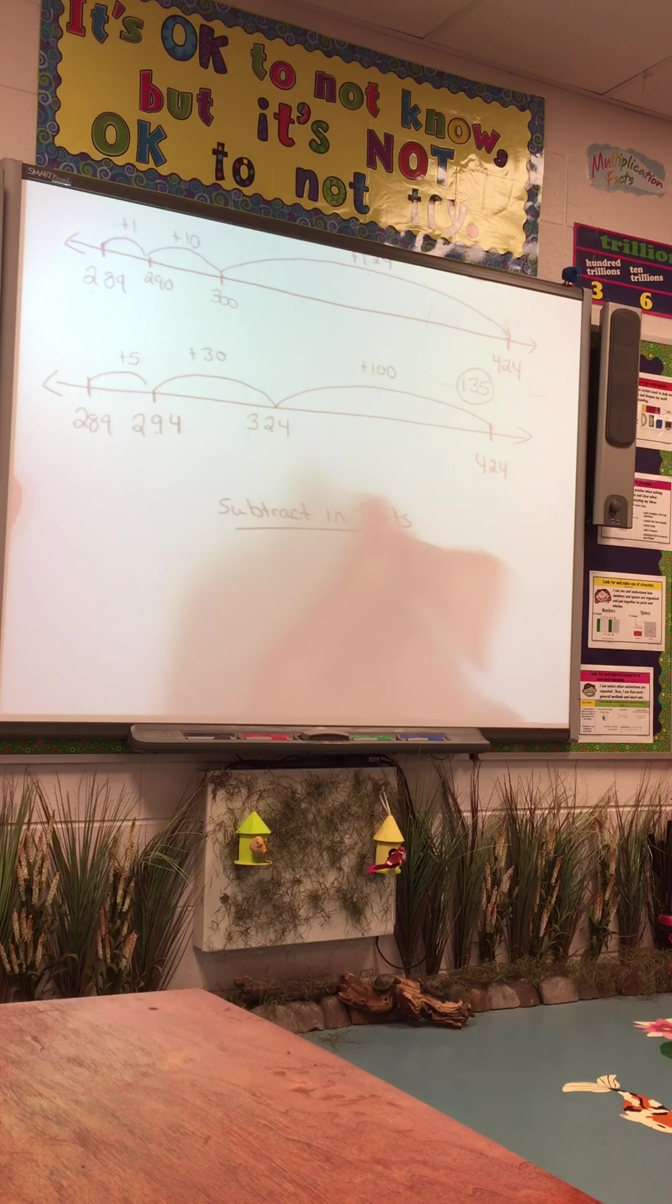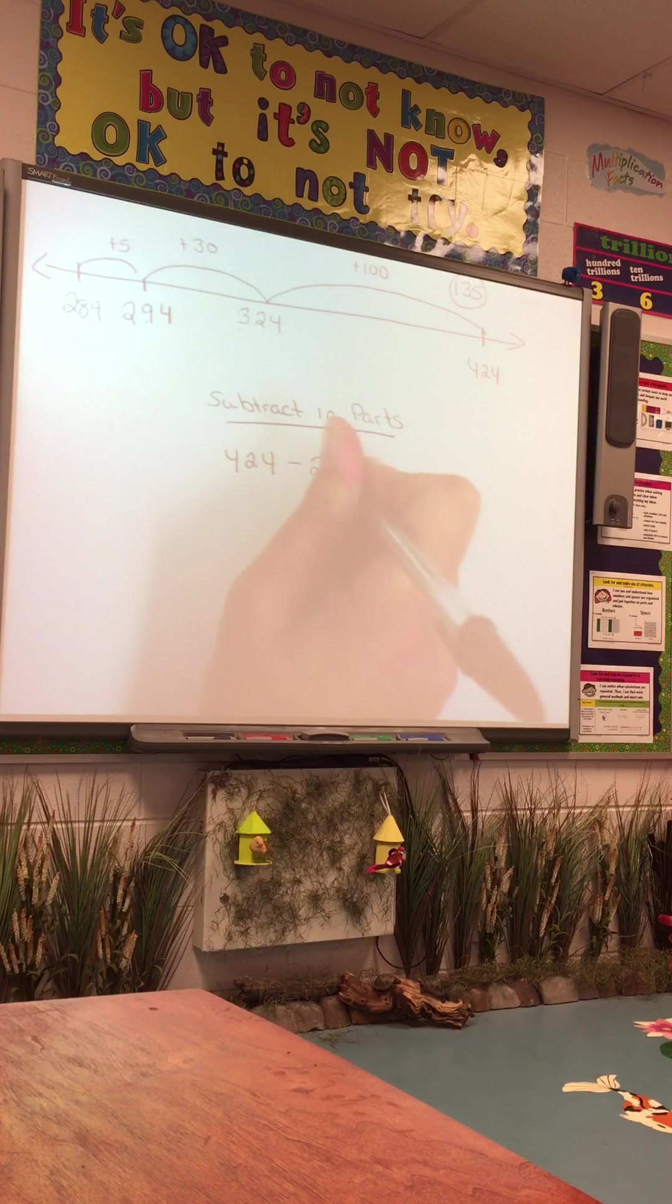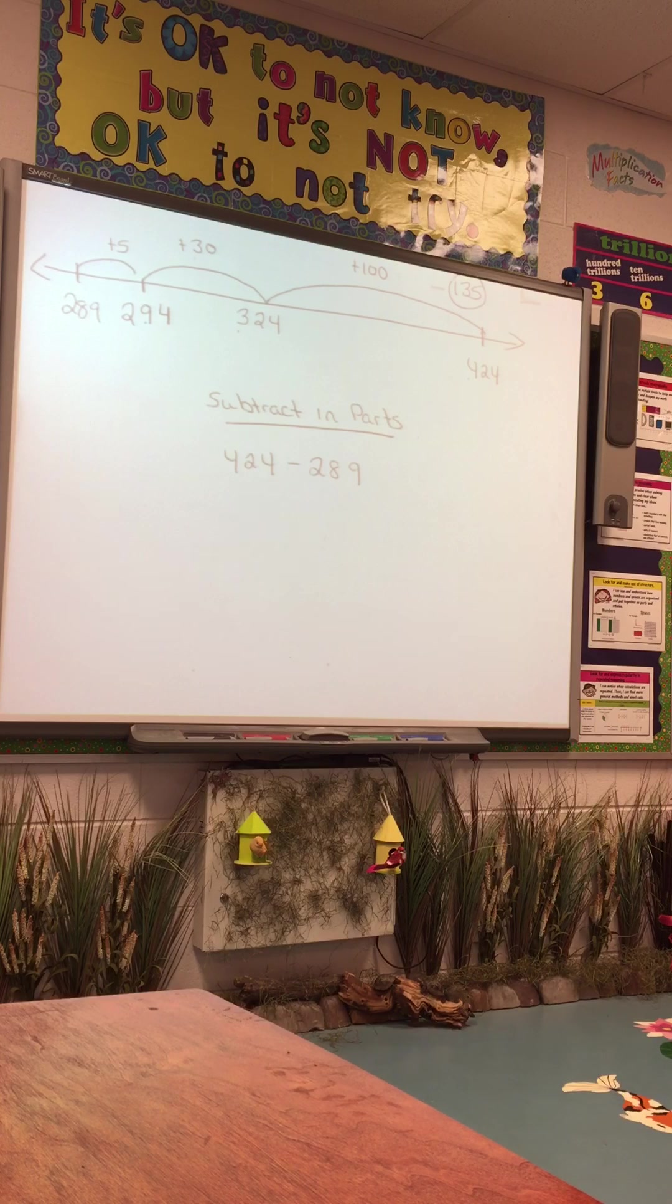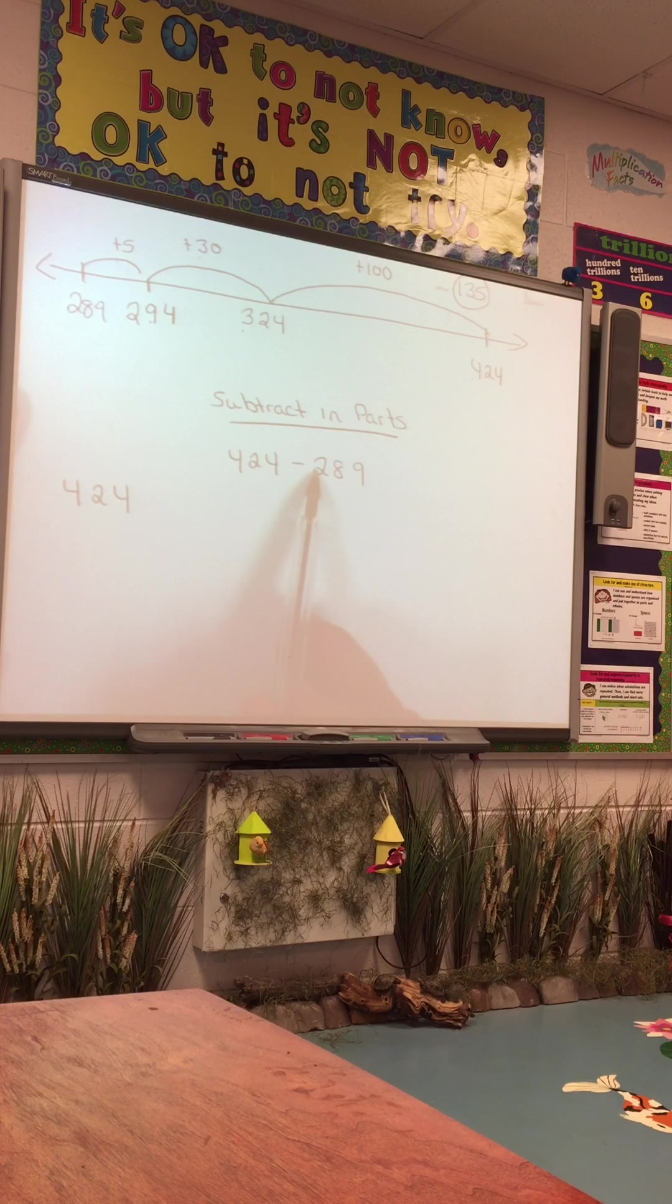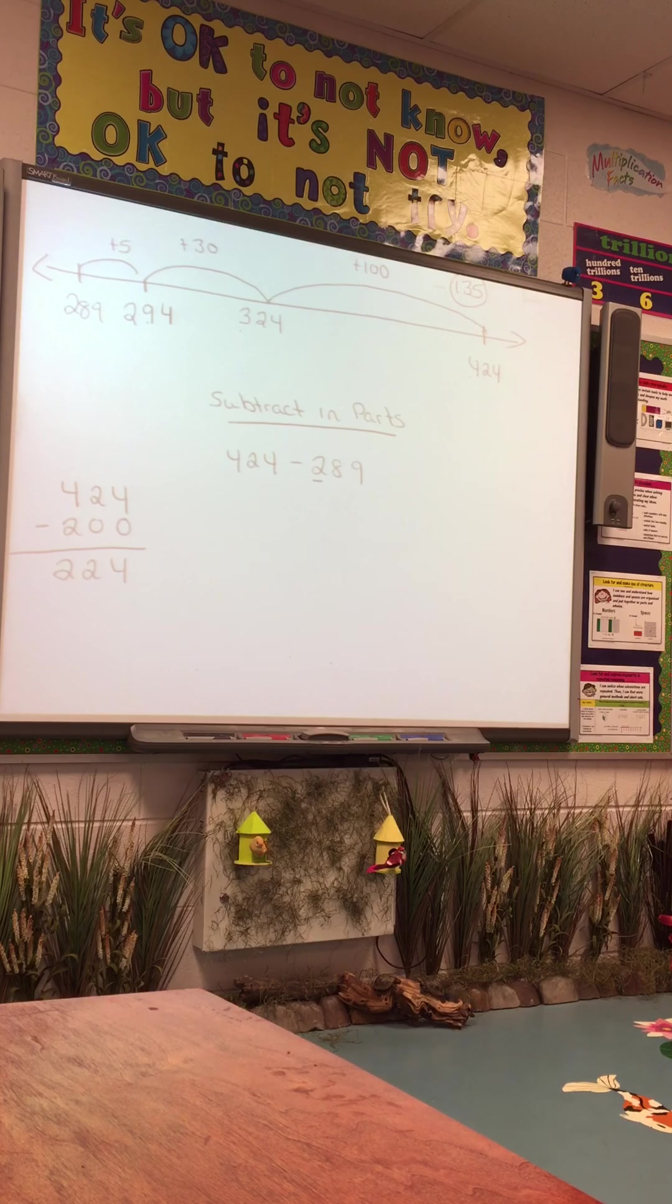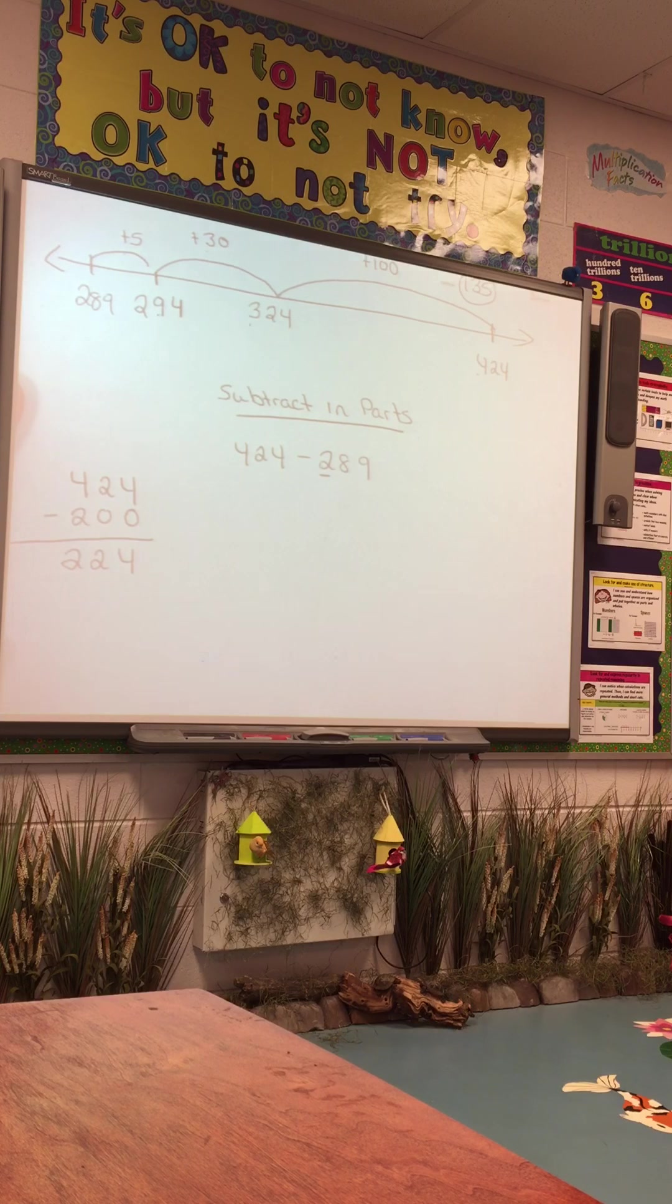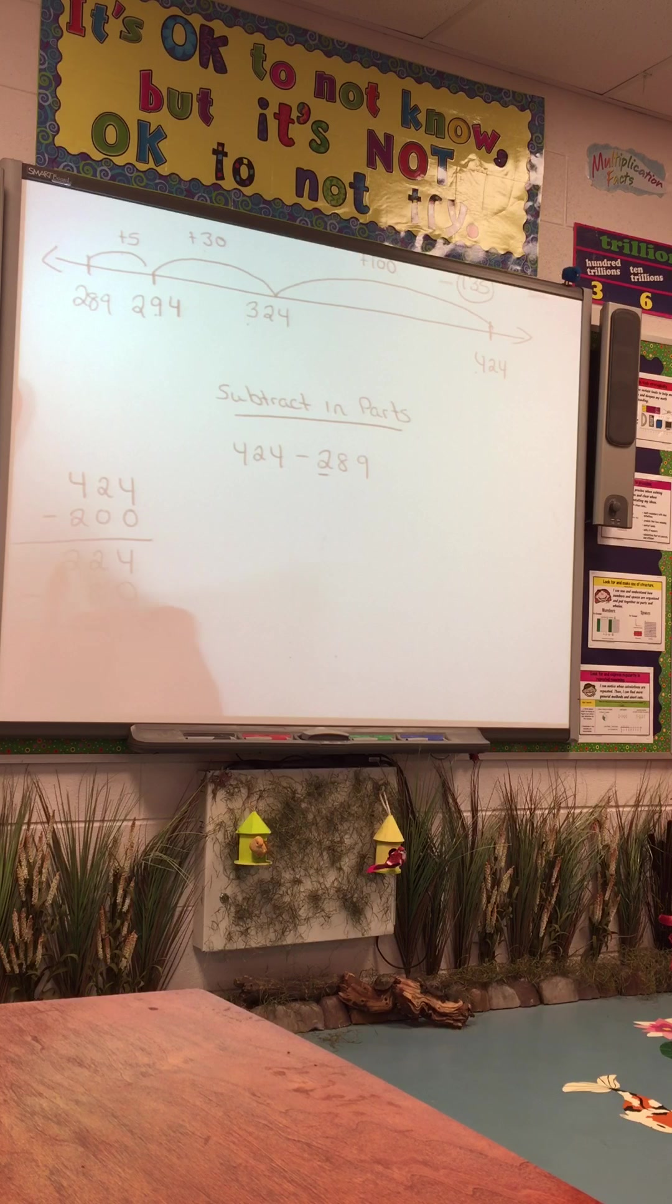Alright, another strategy is subtracting in parts. So when I subtract in parts, I'm going to use the same problem, 424 minus 289. It can be written two different ways. I'm going to break down this number by the value of each digit. So 424 minus 200 is 224. I've taken care of the 2 in the hundreds place. So now 224 minus 80.